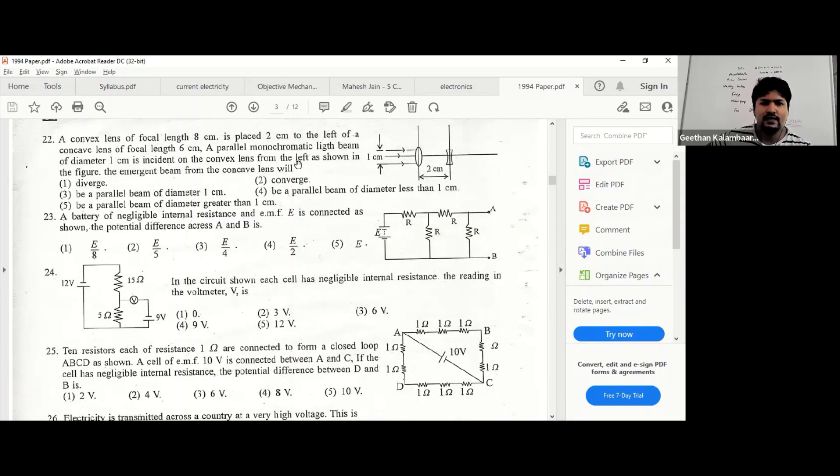The convex lens of focal length 8 centimeters is placed to the left of a concave lens of focal length 6 centimeters. A parallel monochromatic light beam of diameter 1 centimeter is incident on the convex lens from the left as shown in the figure. The emergent beam of the concave lens - they ask us to draw that. The distance between the two lenses is 2 centimeters, and the focal length of the convex lens is 8 centimeters, so whatever the rays...